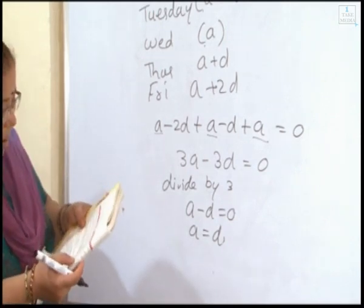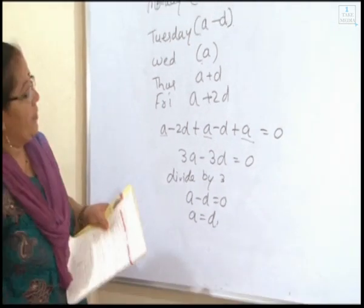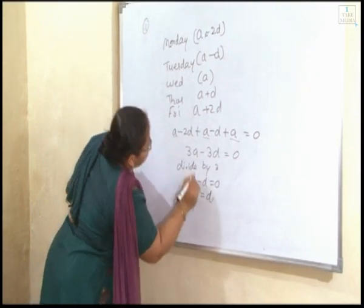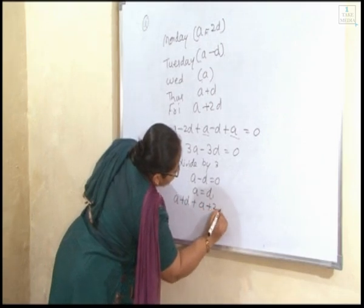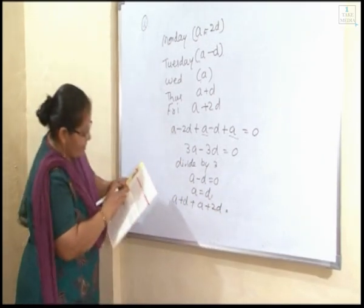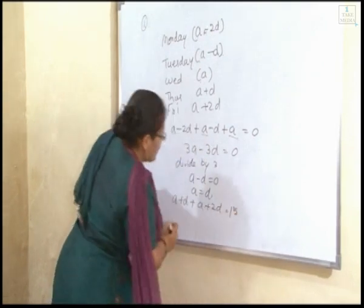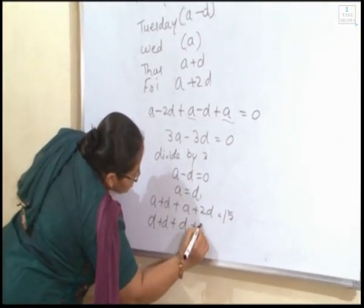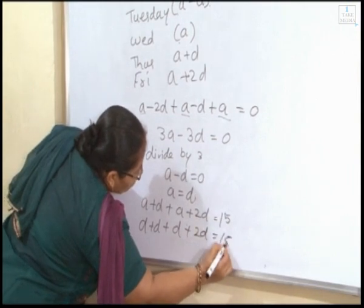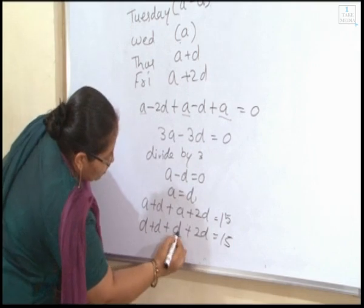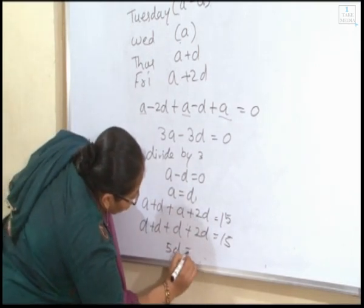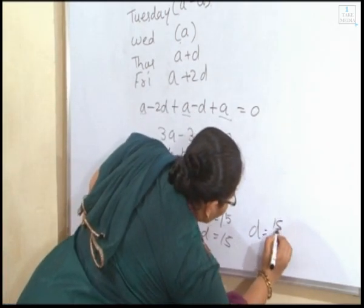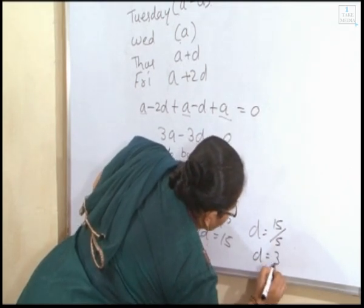Now the other condition is given: the sum of the temperature Thursday and Friday is 50. So we will do Thursday is A plus D and Friday is A plus 2D equals 50. Instead of A we can write D. D plus D plus D plus 2D equals 50. So how many D's come? 2, 3, 4, 5. So 5D equals 50. D equals 50 upon 5, so D equals 3.